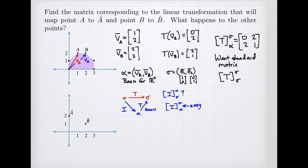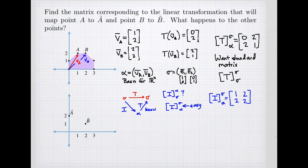Here's why the change of basis from alpha to sigma is easy. If I think about my vectors, I have vector VA represented in the sigma basis with coordinates (1,2), and my second vector VB with coordinates (2,2). So the identity transformation's matrix going from alpha to sigma puts the coordinates of the first vector (1,2) in the first column and the second vector's coordinates (2,2) in the second column. Going in the other direction, I use the inverse of that matrix.